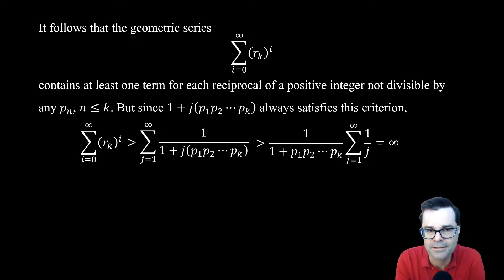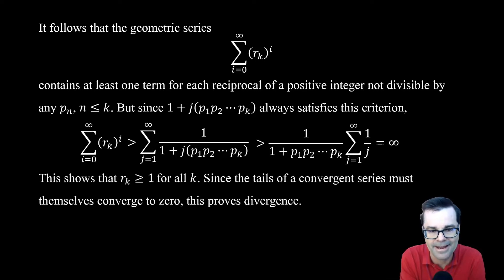But when does a geometric series diverge? And these are all positive terms. It's going to diverge when the common ratio is bigger than or equal to 1. So what we've shown now is that this tail, the kth tail of our original series of the reciprocals of the primes, that has to be bigger than or equal to 1. Every tail. So for all k.